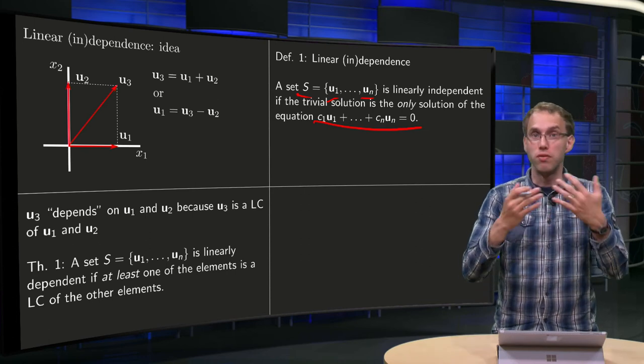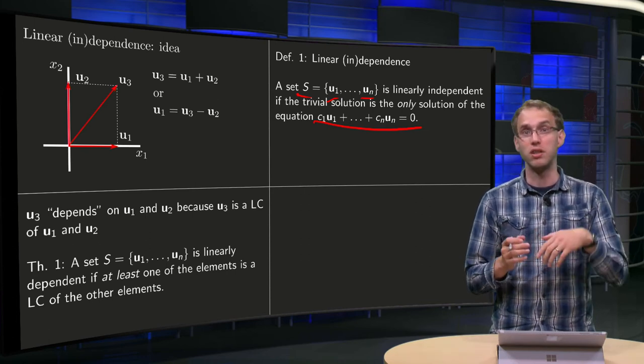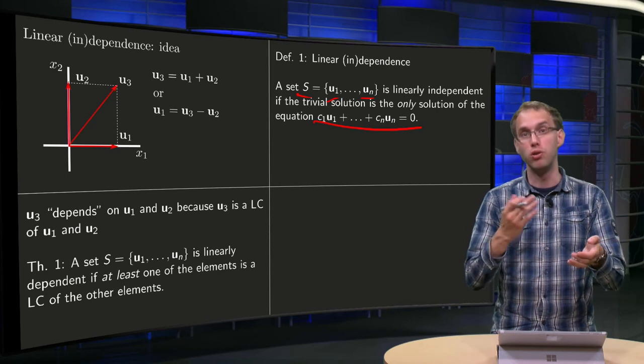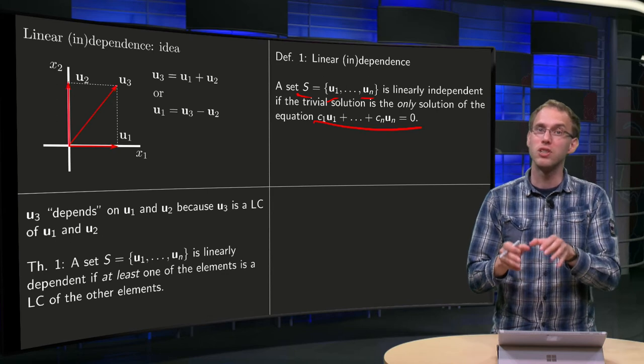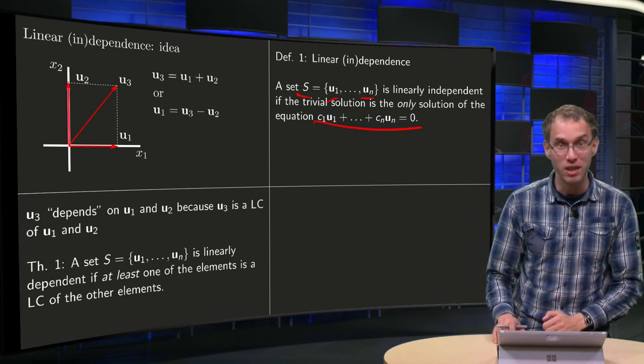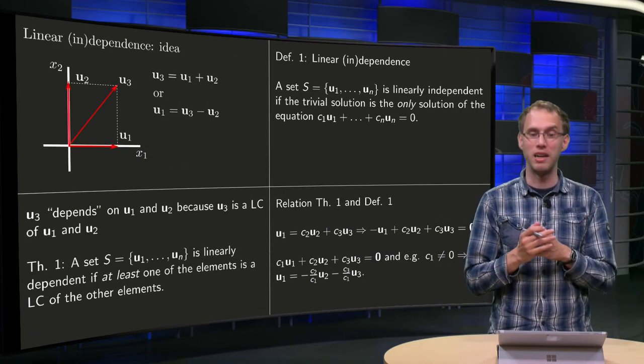It's clear that you can check rather easily in this way whether a set is independent or not. Just, you just have to solve one vector equation and you have to see whether you have only a trivial solution or whether you have also non-trivial solutions. That's a nice definition to work with. But what does it have to do with the theorem, with the geometric idea behind this?